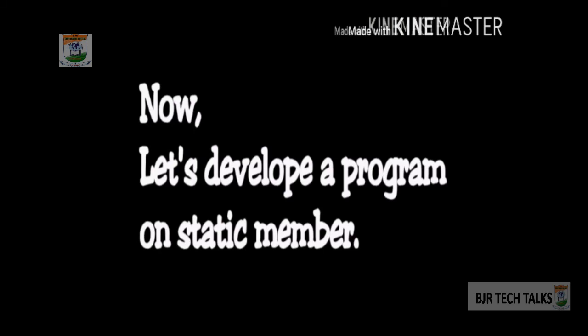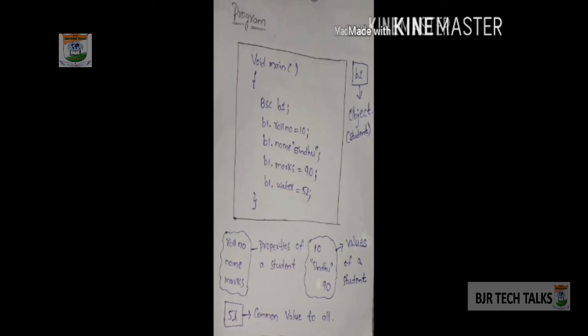Now let's develop a program on static member. From here, the program will start. Here, we have created class BSE. B1 is a student or object we have taken. We have entered some values and properties of B1 here. Properties will be same to all students, but values will be different. Now, water is a common property to all — not only to B1, it is same for all students. It is a shared property, but not an individual property. Even though the value of water is 5 liters, it will reflect the same to all other objects also. Water is not confined only to B1, but to all.